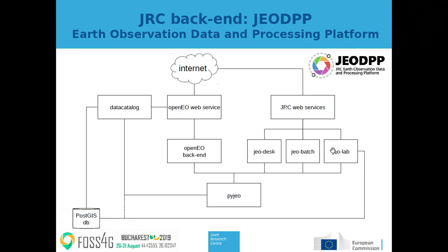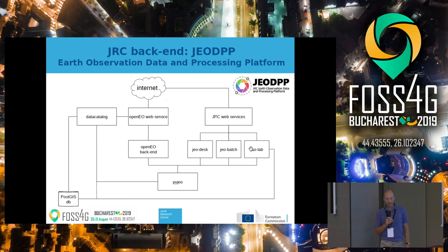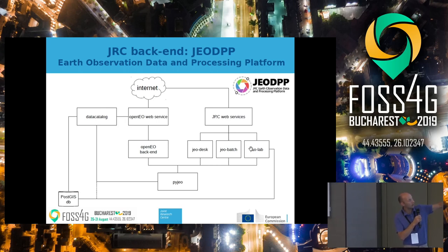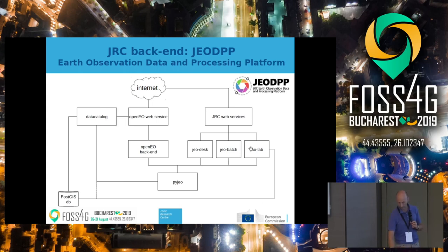Here is a schematic overview of what the GeoDPP is about. As an entry point for the internet, we have the web services. We have an internal part of the web services, which you see here as the JRC web services. Then there is the OpenEO part, which is supposed to be the entry point for users in general, but this is a proof of concept, so it is not yet open to the public for now. There is the data catalog, which is querying the data stored on our platform. One layer below, we have the OpenEO backend that makes things happen for OpenEO, and the services below — the web services for internal use, the Geodesk, Batch, and Lab — all of this being served by the PyGeo library in Python we have designed.